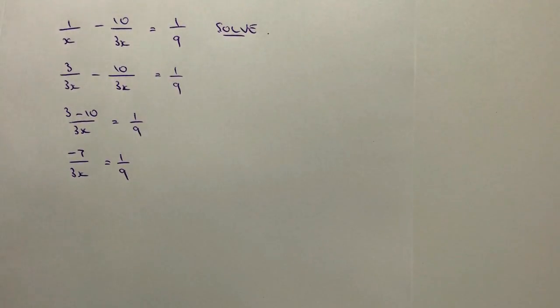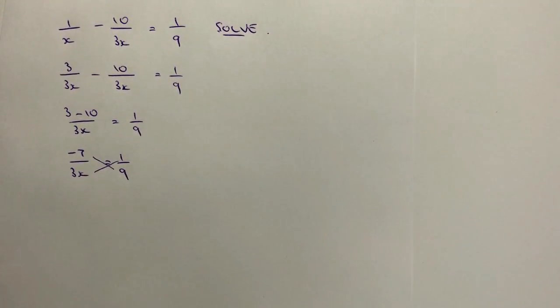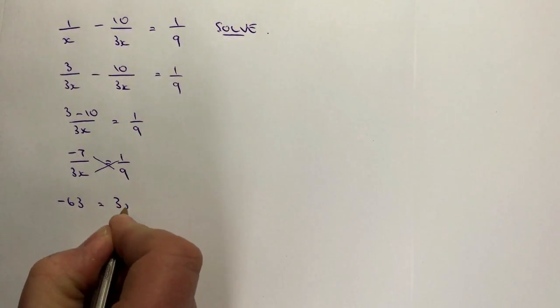Now it's probably easier at this point for me to cross multiply. So what I'm going to do is multiply those two together and those two together. And what I'm actually going to get is minus 63 equals 3x.